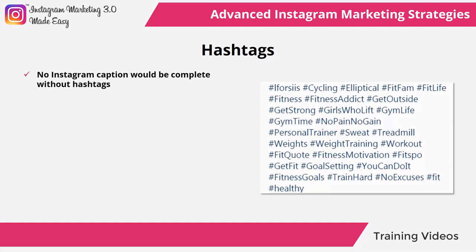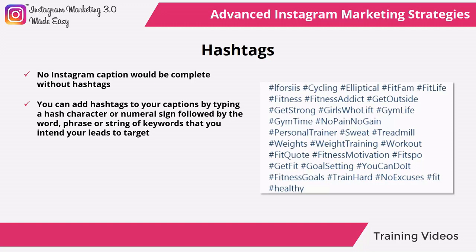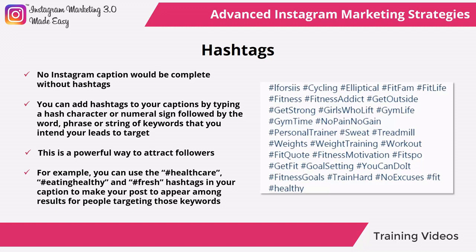Hashtags. No Instagram caption would be complete without hashtags — labels that help social media users to find specific information relevant to a keyword or string of keywords. You can add hashtags to your captions by typing a hash character followed by the word, phrase, or string of keywords you intend your leads to target. The maximum and minimum number of hashtags you should include in your posts is 11. This is a powerful way to attract followers because users can find your products or promotions just by typing a particular keyword or looking for a certain combination of keywords as a hashtag. Our final recommendation is to create hashtags as strings of keywords rather than single keywords, because single keywords can yield too many results.